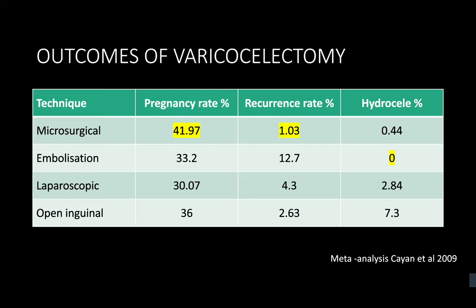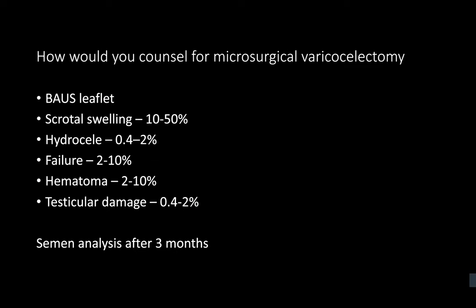The pregnancy rate following microsurgical varicocelectomy is between 25 to 40 percent. An analysis by Cayan 2009 compared different varicocelectomy procedures, and microsurgical varicocelectomy had the highest pregnancy rate of nearly 42 percent with minimal complications.